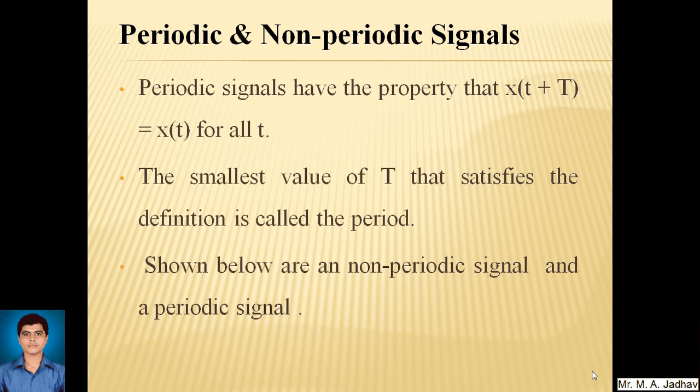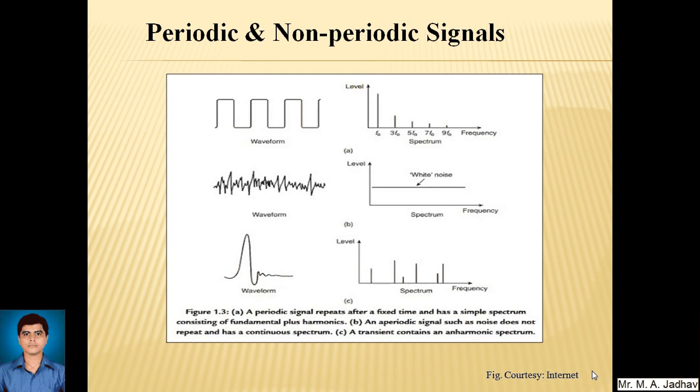Next classification, periodic and non-periodic signals. Periodic signals have the property that x of t plus T is equal to x of t for all t. The smallest value of capital T that satisfies the definition is called the period. Shown below are non-periodic signals and periodic signals. The upper diagram shows us a periodic signal where a signal repeats after fixed time and has a simple spectrum consisting of fundamental plus harmonics. The waveform shown is repeating after fixed time continuously. It is a square wave and its spectrum is also given.